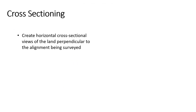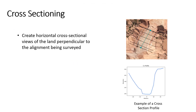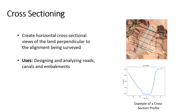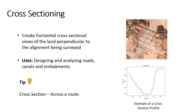Next, we move on to cross-sectioning. Cross-sectioning involves the creation of horizontal cross-sectional views of the land perpendicular to the alignment being surveyed. This technique provides valuable information about the terrain's shape, dimensions, and features at specific locations. Cross sections are particularly useful for designing and analyzing infrastructure elements like roads, canals, or embankments.